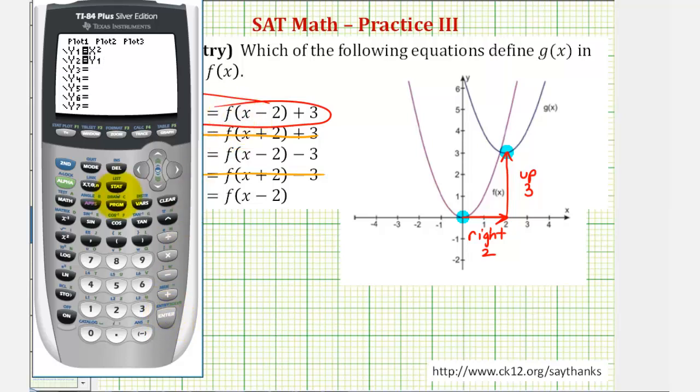And now we'll have in parentheses, x minus two, close parenthesis, and then plus three. And this should verify that y two will be shifted right two units and up three units from y one.